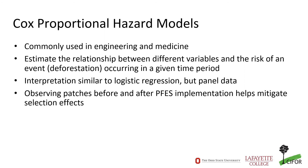The way we estimate our effects is to use a Cox proportional hazard model. These are statistical models commonly used in engineering and medicine, and their purpose is to help estimate the relationship between a set of variables and the risk of an event occurring in a given time period. Originally they were used to model the amount of time it would take for a part of a machine to fail or for somebody to succumb to a disease. In our case, we're using it to model the amount of time it takes for one of these forested pixels to get deforested.